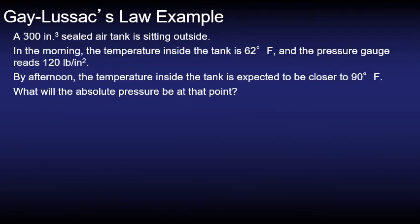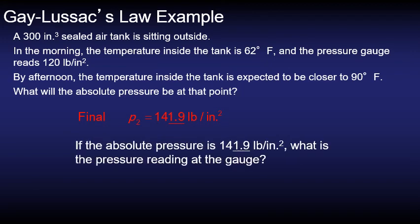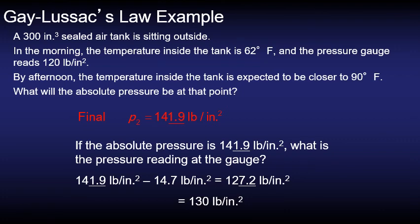So let's take this a step further. We've figured out what the final absolute pressure is which is what the question asked, but what would be the gauge pressure? The gauge pressure here we can work backwards and take the absolute pressure and subtract the atmospheric pressure and we would be left with the gauge pressure. So in this case it would be 127.2 psi.